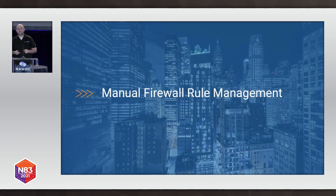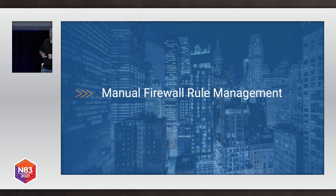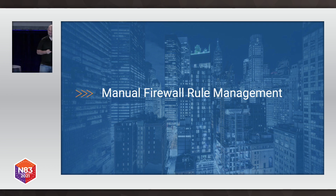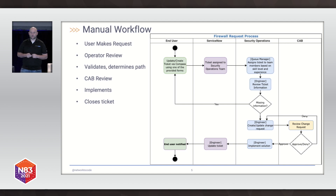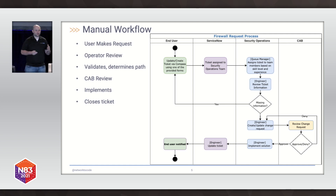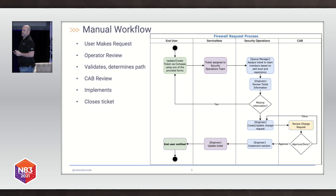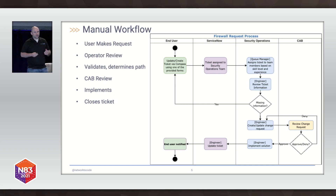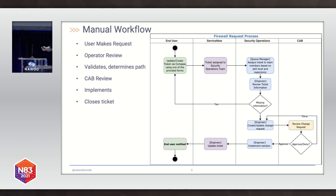Manual firewall rule management — this is what I see for most organizations as we get engaged to talk to them about automating such processes. We see a workflow something like this: a user makes a request, oftentimes an Excel document or similar. Some security person reviews it for validity, whether it's a good rule or not, path analysis, which firewalls it should go on — potentially multiple firewalls. We'll go through a CAB review process to schedule that change, and finally implementation and closing the ticket.